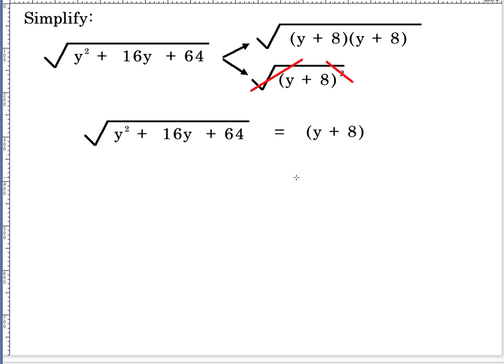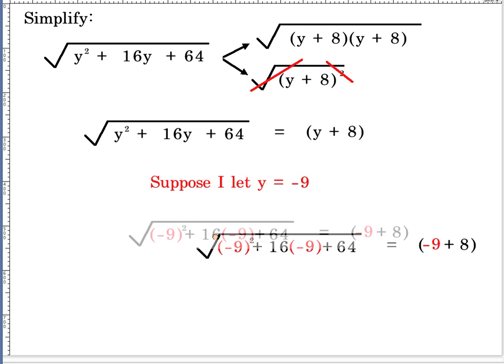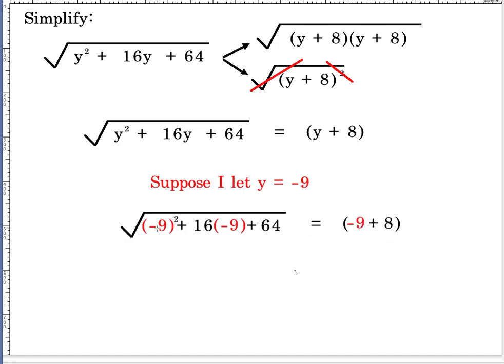But once again, this has to be true for all replacements of y. And so, suppose I let y equal negative 9. And if I do that, the left hand side is going to look like this and the right hand side is going to look like this. And I went ahead and crunched this out. This actually evaluates to 1 and so we end up with this situation right here, which is identical to where we were before with the simpler example.